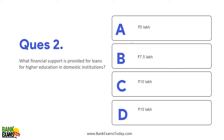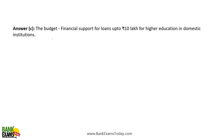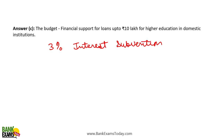What financial support is provided for loans for higher education in domestic institutions? It is ₹10 lakh financial support for loans for higher education in India in domestic institutions. Further, 3% interest subvention would be provided for these loans.